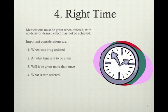Right time: medications must be given when ordered with no delay, or the desired effect may not be achieved. Important considerations are when the drug is ordered and at what time it is to be given, whether it will be given more than once, and at what rate it is ordered — this could be in drip form, bolus form, or multiple forms.